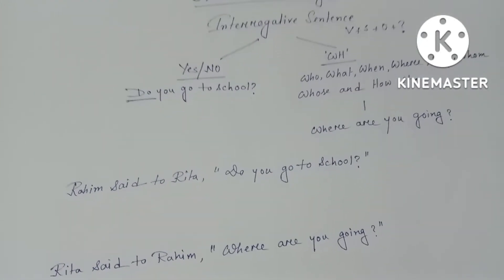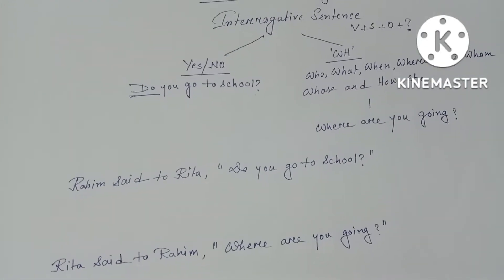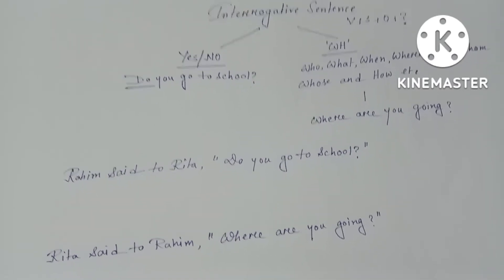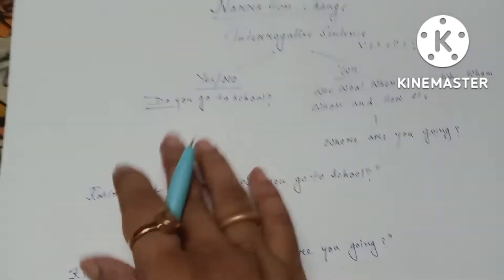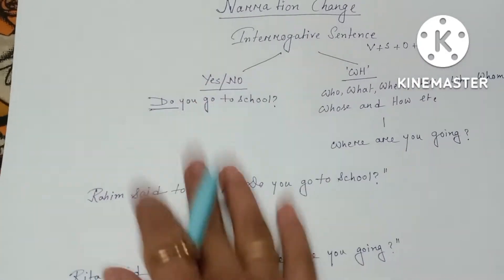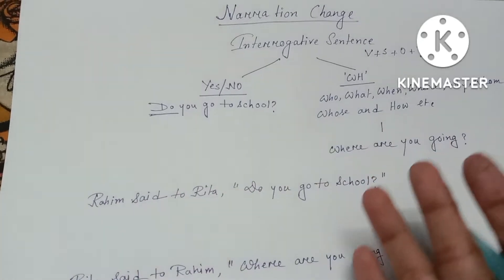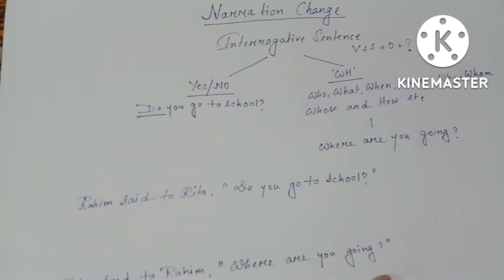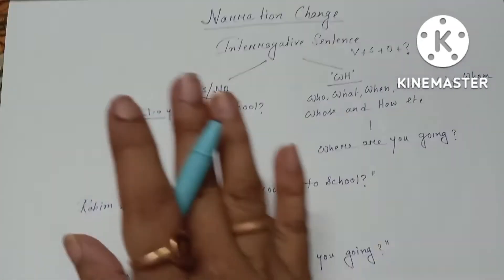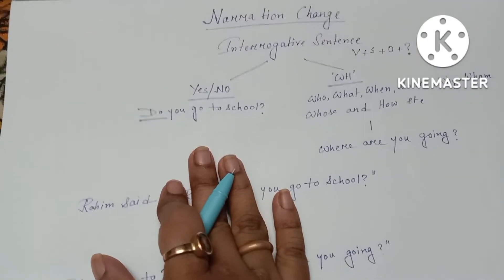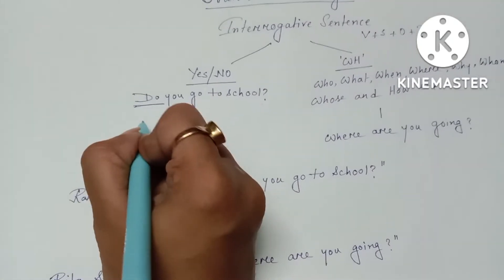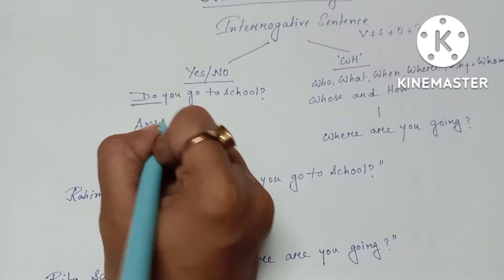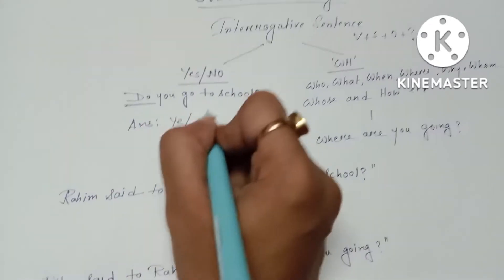For example: 'Do you go to school?' The answer should be 'Yes, I go to school' or 'No, I don't go to school.' So this is called a yes/no question because the answer should be in yes or no.